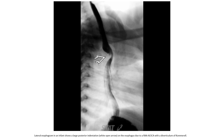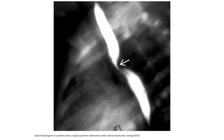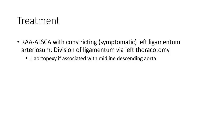Lateral esophagram in an infant shows a large posterior indentation on the esophagus due to the aortic arch and aberrant left subclavian artery in a vascular ring with a diverticulum of Kommerell. Lateral esophagram in another patient shows a typical posterior indentation by the crossing aberrant left subclavian artery in a vascular ring.